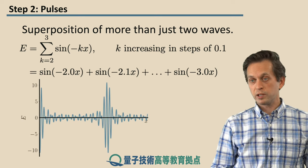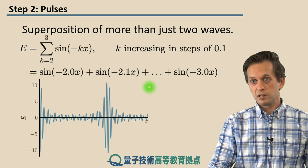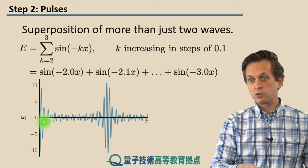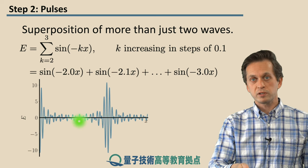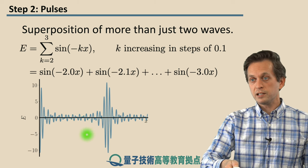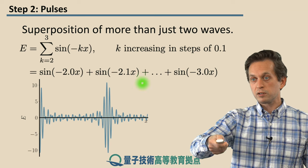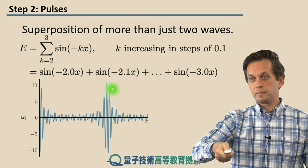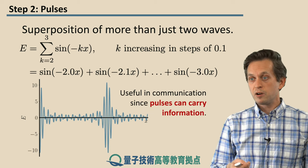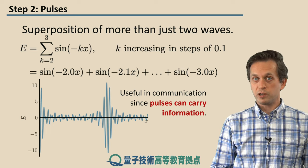And in fact, what we get is the following shape. What we call this shape is a pulse. You can see that for most of x, the superposition is close to zero. There are some disturbances, there are some oscillations, but they're close to zero. And then suddenly constructive interference kicks in and you have this big pulse over there. And pulses are very important because using pulses we can encode information. So it's very important in communication theory.